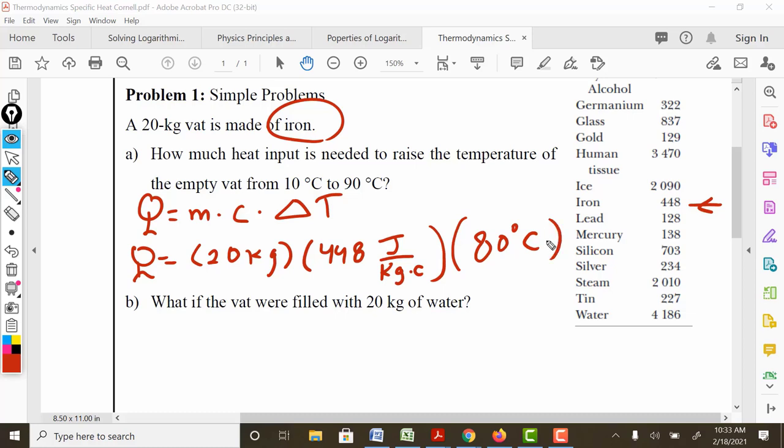It's important that when we do these problems that we have our temperatures in Celsius. That way they cancel out. Notice how the units cancel out so nicely. The kilogram cancels out the kilogram. The Celsius cancels out the Celsius. We're left with a joule, which is the correct unit for heat.